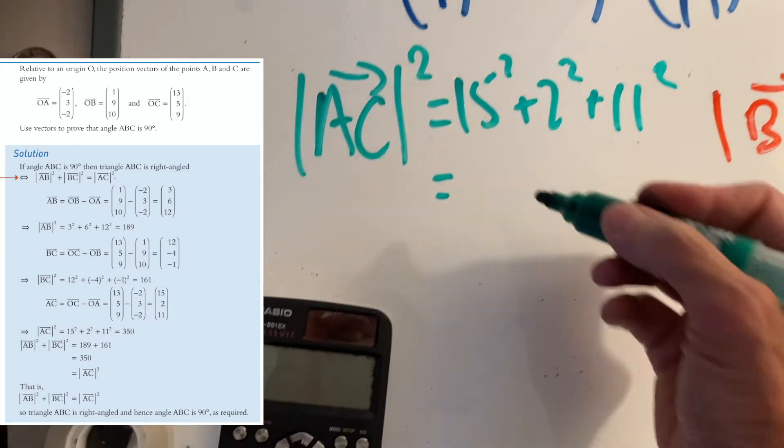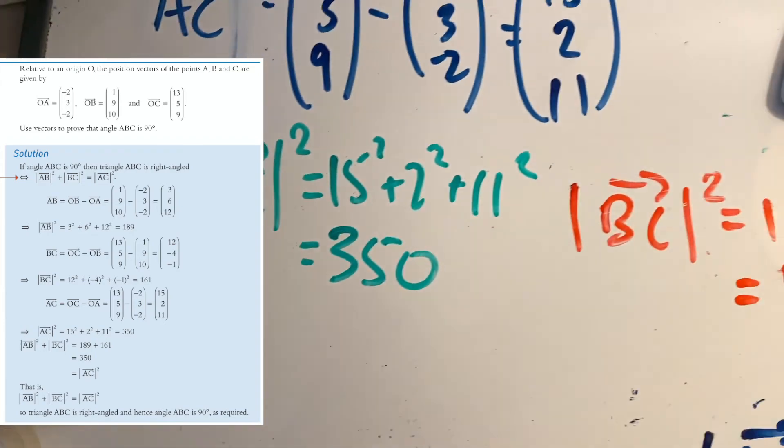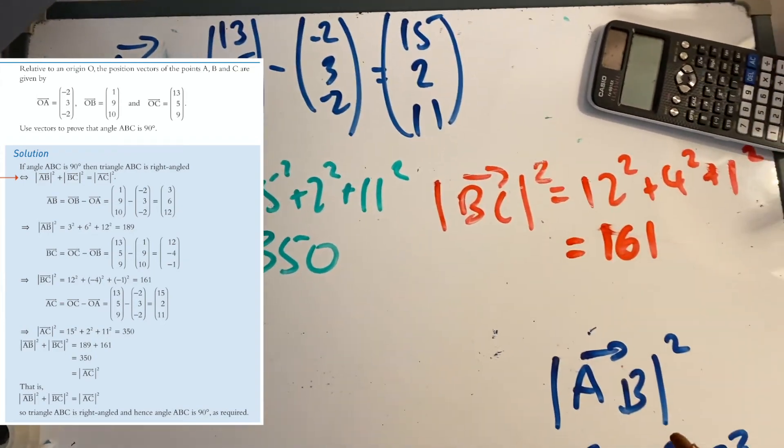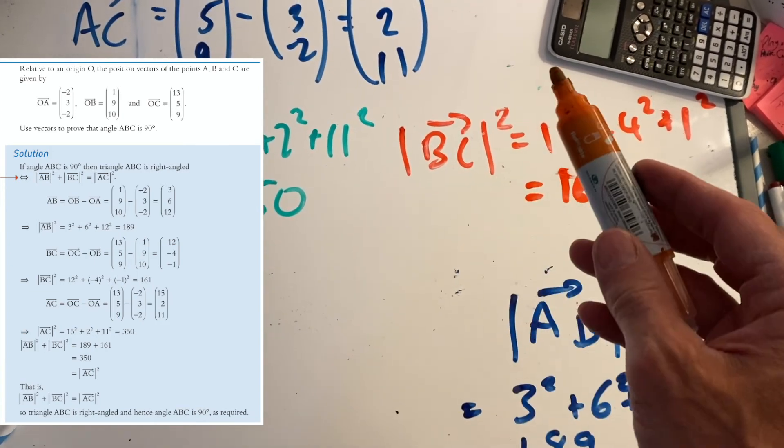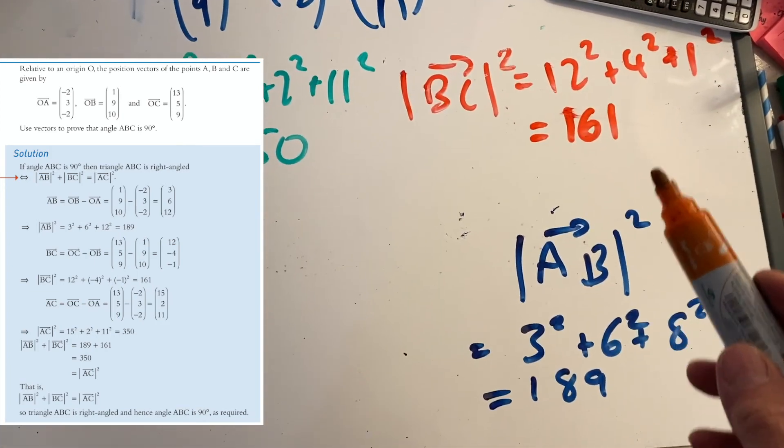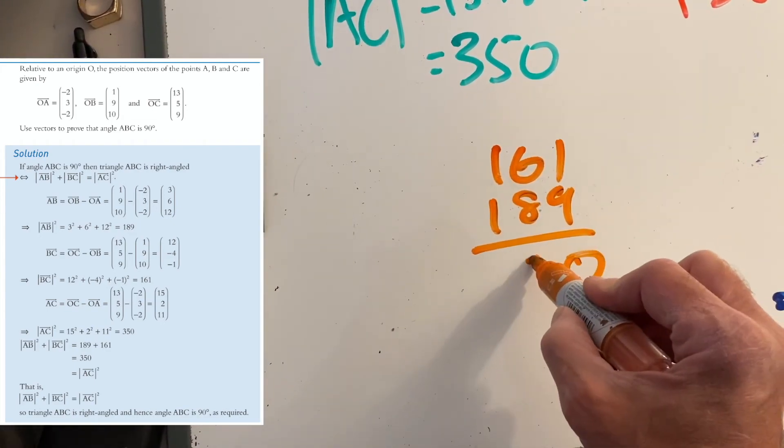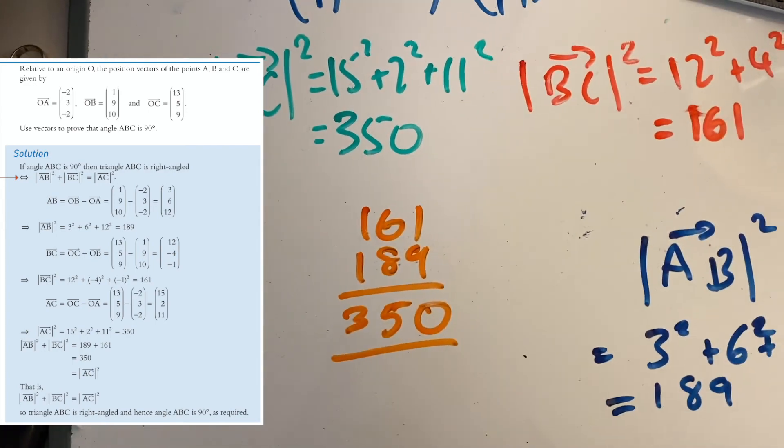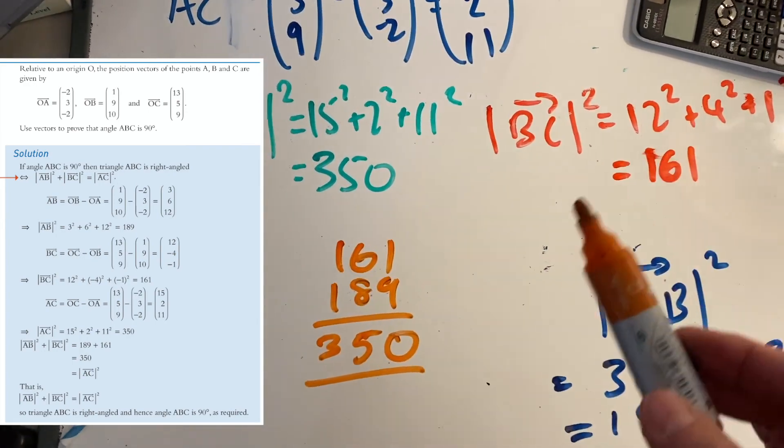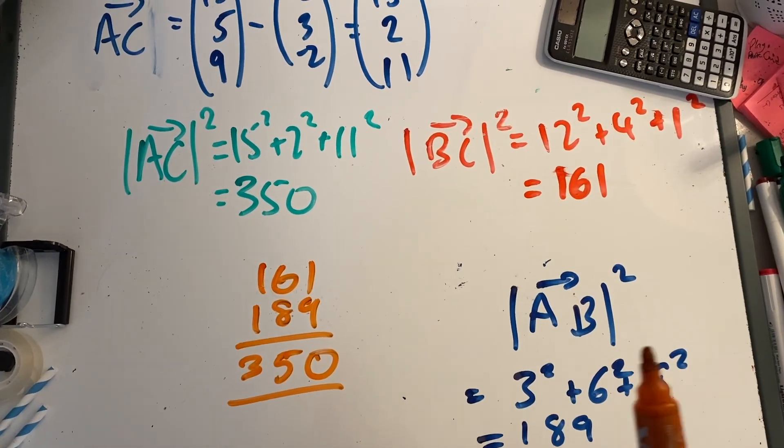As if kind of by magic, let's add up all these ones together. If it is a right-angle triangle, then BC² + AB² will equal AC². So 161 + 189, add that together, does equal 350. So it does equal AC². Therefore, it is a right-angle triangle. Don't forget you always need to say because of this, therefore it is a right-angle triangle. There we go, hope this will help.